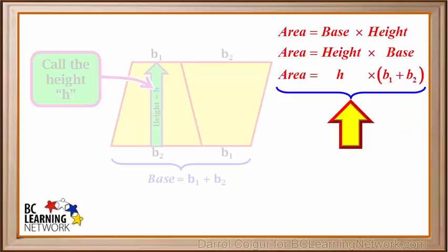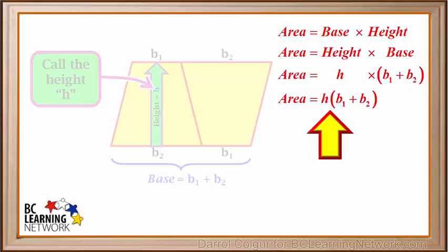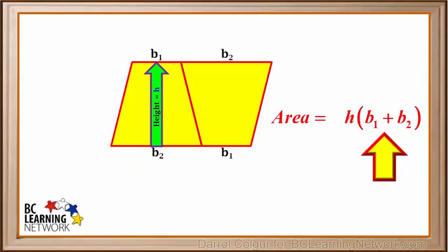So the area is H times (B1 plus B2). We'll make the formula more compact by saying that area equals H times (B1 plus B2) like this. The area of this whole parallelogram is area equals H times (B1 plus B2).